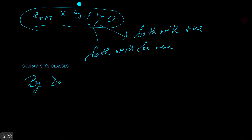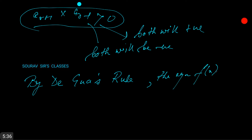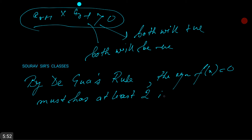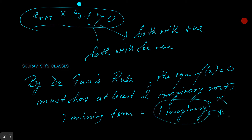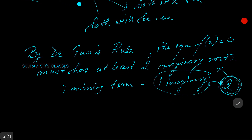Now by De Gua's rule, since both neighboring coefficients have like signs, the equation f(x) = 0 must have at least two imaginary roots. Since we have one missing term, this gives one pair of imaginary roots — imaginary roots cannot exist independently, so they must be two in number. Hence f(x) = 0 has at most n minus 2 real roots.